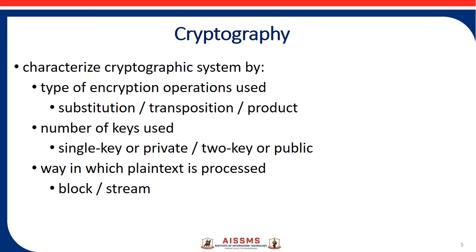The word 'crypt' means hidden and the suffix 'graph' means writing. In cryptography, the techniques used to protect information are obtained from mathematical concepts and a set of rules based on calculations known as algorithms, to convert messages in a way that makes them hard to decode. Cryptography systems are characterized by: type of encryption operation used (substitution, transposition, or product); number of keys used (single/private key or two/public key); and the way plain text is processed (block or stream).